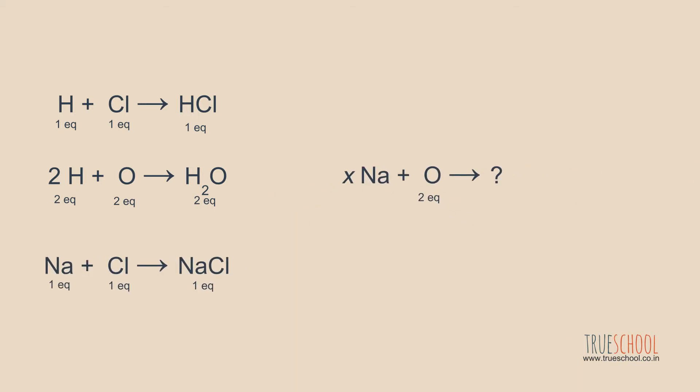Now with these informations, we look back at the problem at hand. We need to find the mole of Na which will react with one mole of O atoms. Now one mole of O atom is two equivalent and hence we require two equivalent of Na too. Now one mole of Na is one equivalent. Hence two equivalent should be two moles of Na. Hence one mole of O will react with two moles of Na and the product will be Na2O. And the equivalent of Na2O will be two.